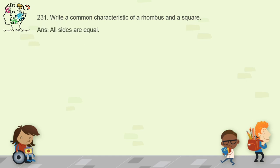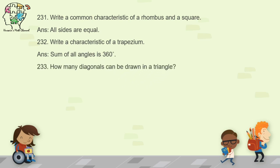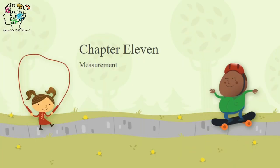Question 232: write a characteristic of a trapezium. A trapezium is also a quadrilateral, so the sum of all angles is 360 degrees. Question 233: how many diagonals can be drawn in a triangle? In a triangle, no diagonals can be drawn, because to draw a diagonal you need two opposite vertices, but a triangle has no opposite vertex.